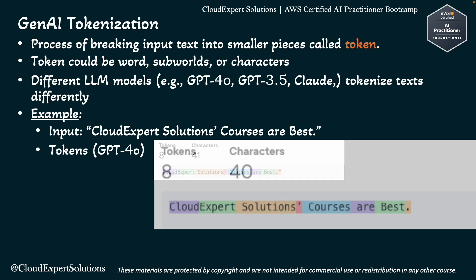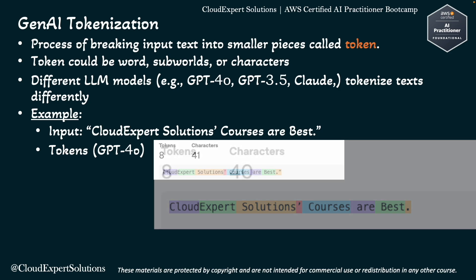The eight tokens would be: cloud, expert, dash-solution, semicolon, space-courses, space-are, space-best, and period. You can see that even special characters like semicolons and periods are also considered as tokens.